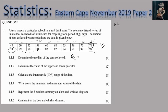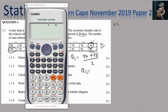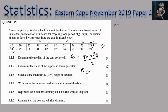So I'm going to say 76 plus 78, all over 2. Let me take out my calculator to avoid mistakes. 76 plus 78 all over 2 gives me 77. So my Q2 in this situation is equal to 77.